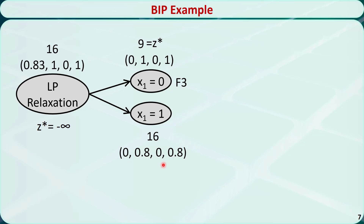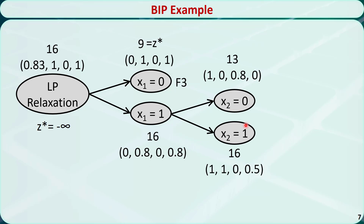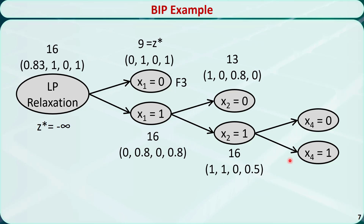The other branch is not fathomed yet. We pick x2 as the branch variable and formulate two subproblems. We solve these and find their optimum solutions. Neither of the two problems is fathomed, so we continue. For one branch, we split using x4 and formulate two subproblems. We find that one subproblem is infeasible, so it is fathomed based on test 2.